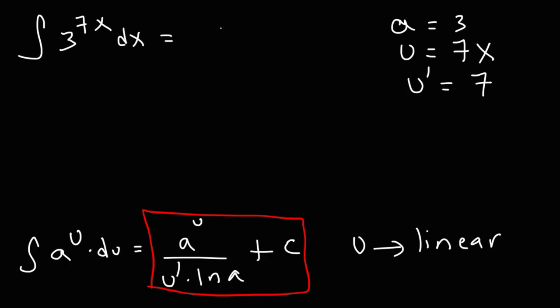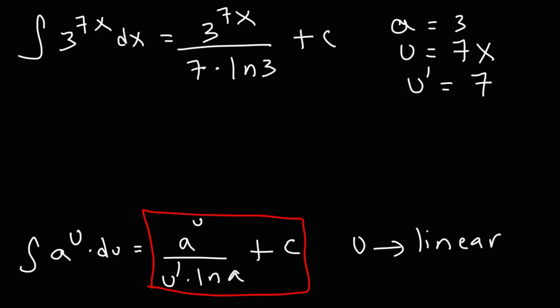So the answer is going to be a to the u — that's 3 raised to the 7x — divided by u prime, which is 7, times ln a, or ln 3, plus the constant of integration. And so that's it for that example.